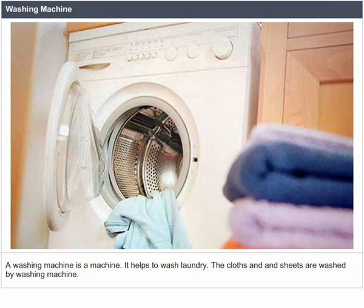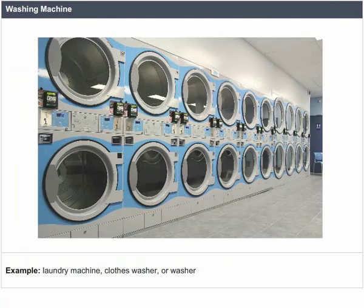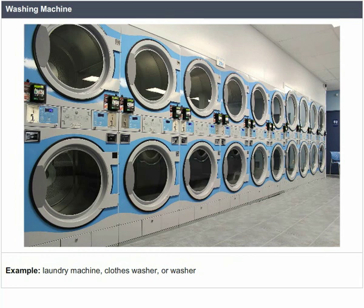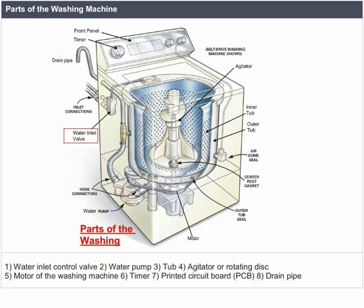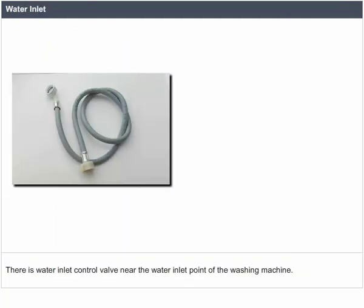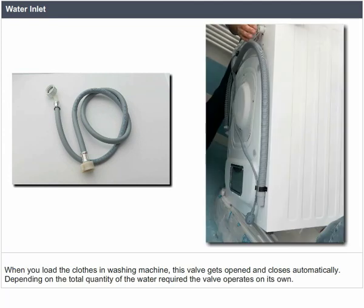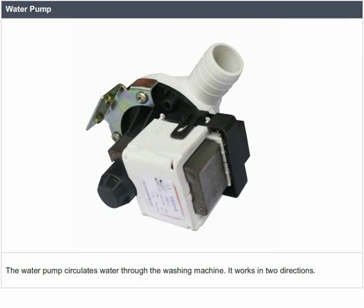A washing machine is a machine that helps to wash laundry. Clothes and sheets are washed by a washing machine, also known as a laundry machine, clothes washer, or washer. The washing machine has the following parts: water inlet control valve, water pump, tub, agitator or rotating disc, motor, timer, printed circuit board, and drain pipe. There is a water inlet control valve near the water inlet point; when you load the clothes, this valve opens and closes automatically depending on the total quantity of water required.